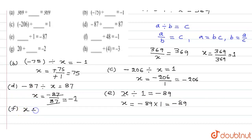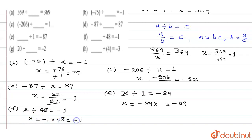Question f: x divided by 48 equals minus 1. So x equals minus 1 multiplied by 48, giving x equal to minus 48.